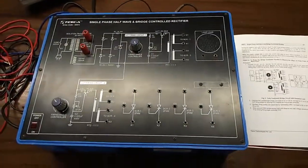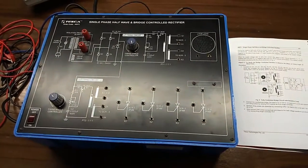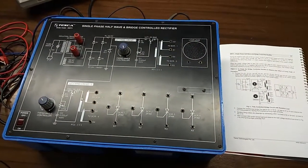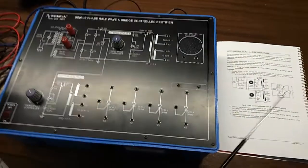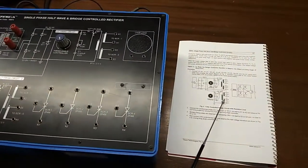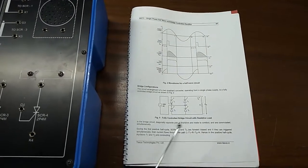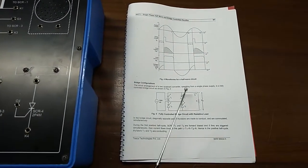Our next object is to study the bridge controlled rectifier and observe the effect of firing angle on waveform. For this we need to build this connection like this. First, I am going to connect the SCRs like this given here in the figure.